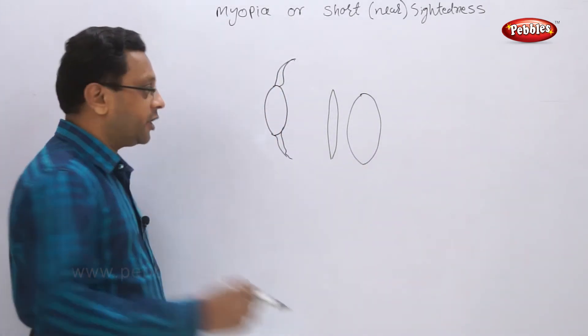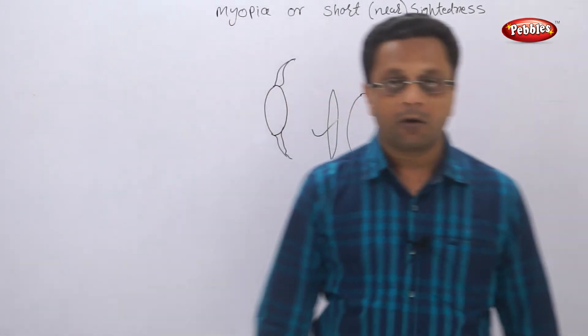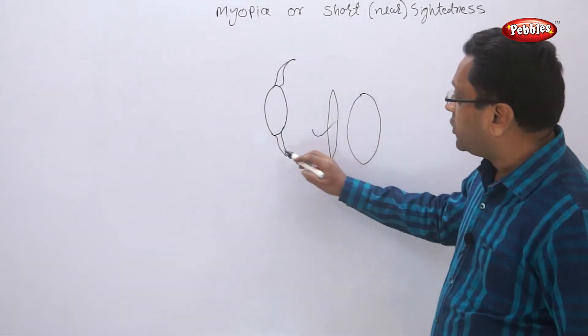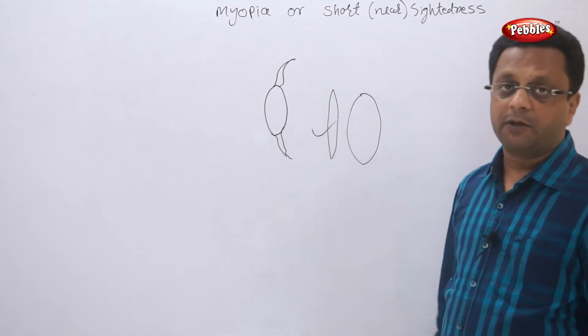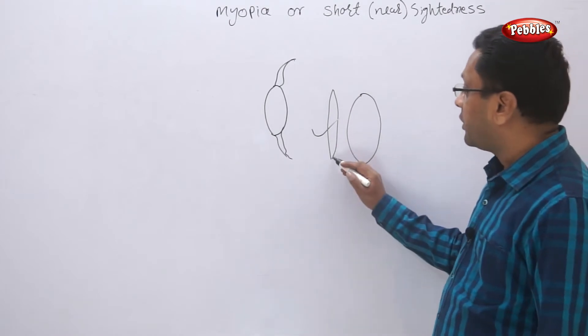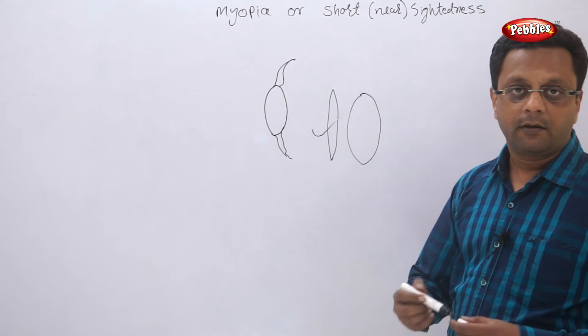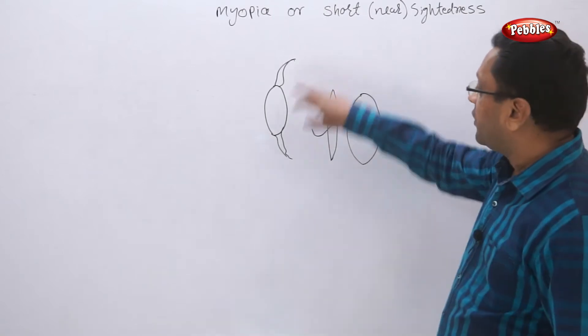To see the distant object we require thin lens. But suppose these muscles are weak, what will happen? The lens cannot relax properly and so it cannot become thin enough. The bulge is still there because of the weakness of ciliary muscles.